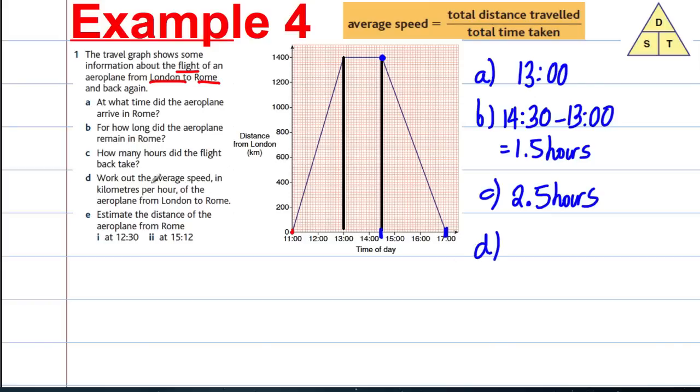Question D: work out the average speed in kilometers per hour of the airplane from London to Rome. Speed equals distance over time, which in this case is 1400 kilometers divided by two hours. Therefore, we're traveling at 700 kilometers per hour.